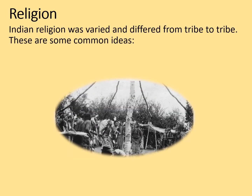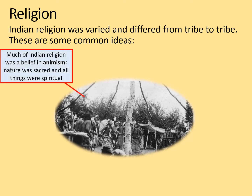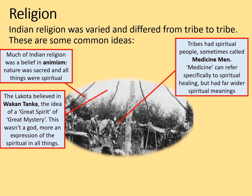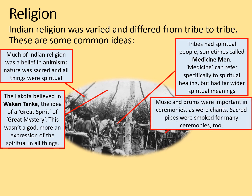Religion. Indian religion was varied and differed from tribe to tribe, but these are some common ideas. Much of Indian religion was a belief in animism — nature was sacred and all things were spiritual. Tribes had spiritual people, sometimes called medicine men. Medicine could refer specifically to spiritual healing, but it had far wider spiritual meanings. The Lakota believed in Wakan Tanka, the idea of the Great Spirit or great mystery — this wasn't a god, more an expression of the spiritual in all things. Music and drums were important in ceremonies, as were chants. Sacred pipes were smoked in many ceremonies too.